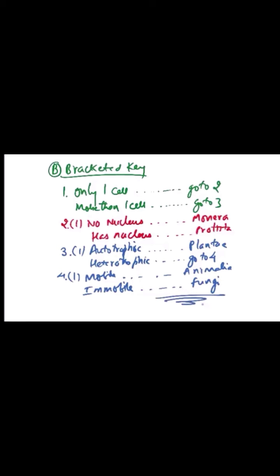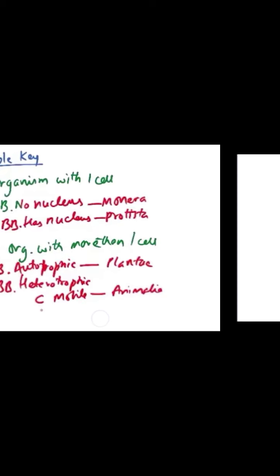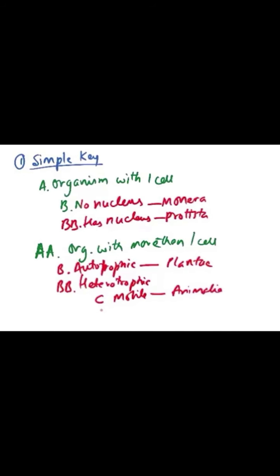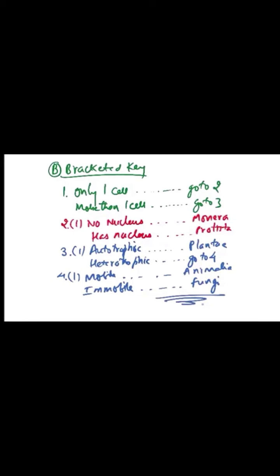If mobile, it goes into Animalia — the key is opened. If immobile, its kingdom is Fungi. The bracketed key works the same way as the simple key — same logic, just formatted differently. Instead of writing directly, you write a character and then 'go to bracket number', adding more detail step by step.